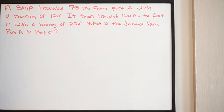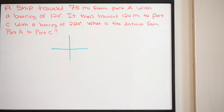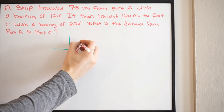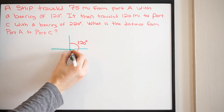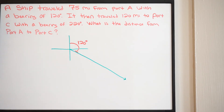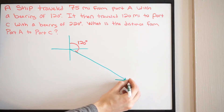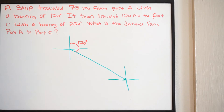Whenever we're dealing with these vector problems, our first step is to create a coordinate grid. The problem says a ship traveled 75 miles from port A with a bearing of 120 degrees, so we put that bearing on — starting north and going clockwise, we end up in the second quadrant. This gives us 120 degrees, and we draw our first vector. Our next step is to draw a second coordinate grid at the tip of that vector.